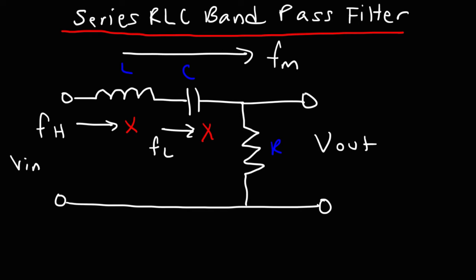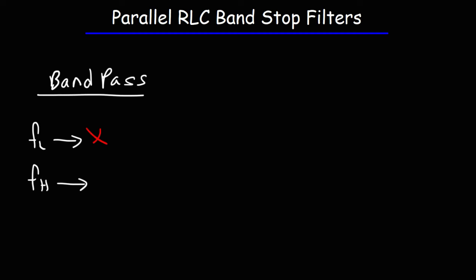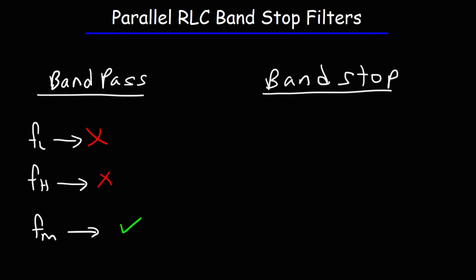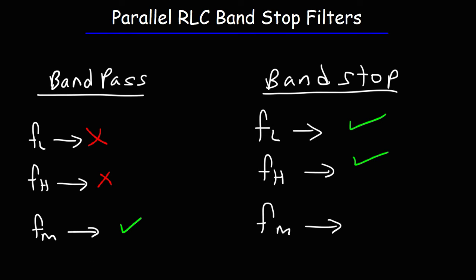That's the series RLC bandpass filter, or at least a brief introduction into it. Now let's move on to the bandstop filters. For the bandpass filters, we saw that the low-level frequencies and the high-level frequencies were both blocked by circuit elements, and only the mid-level frequencies were allowed to pass through. In a bandstop filter, the reverse is going to be true — the low-level and the high-level frequencies will be able to pass through, but the mid-level frequencies are the ones that are going to be blocked.